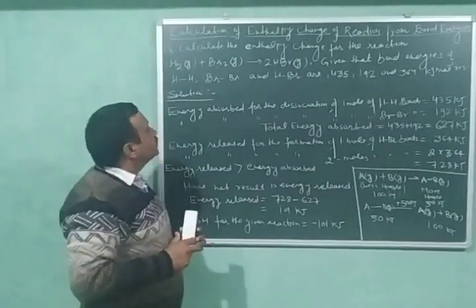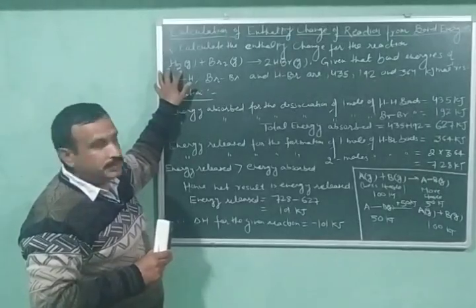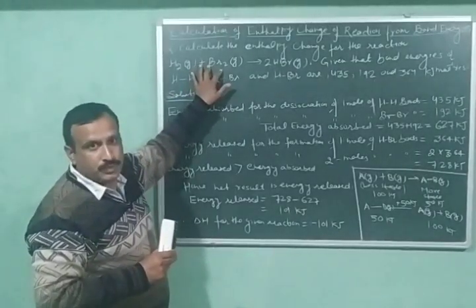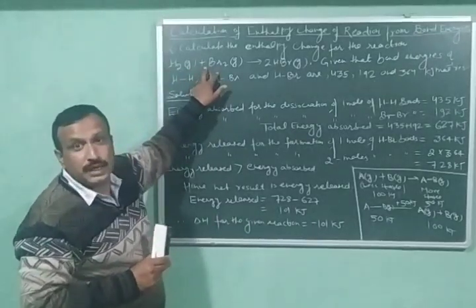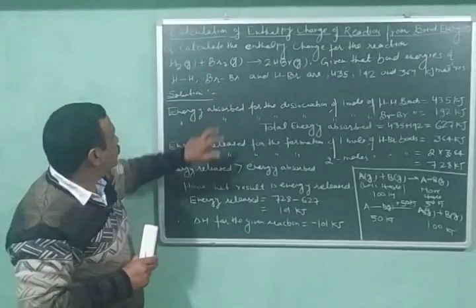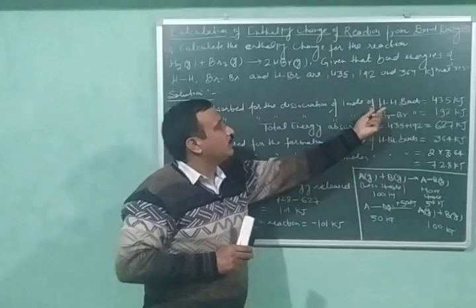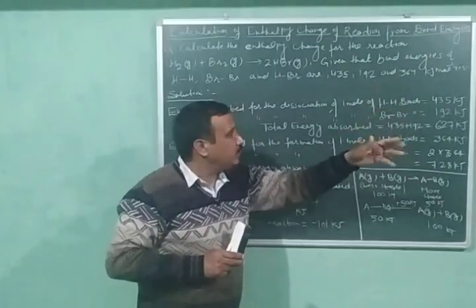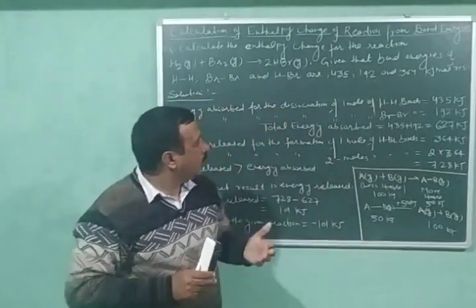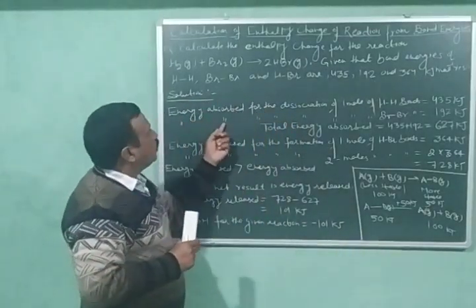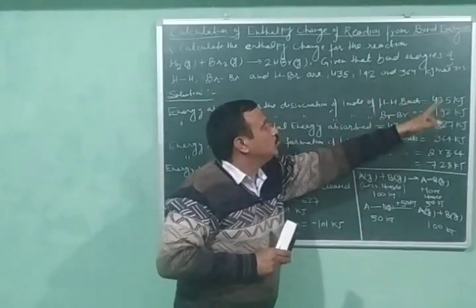In the reactant, we have one mole of H-H bond and one mole of Br-Br bond. The energy absorbed for the dissociation of one mole of H-H bonds is 435 kilojoule per mole, and the energy absorbed for the dissociation of one mole of Br-Br bond is equal to 192 kilojoule.